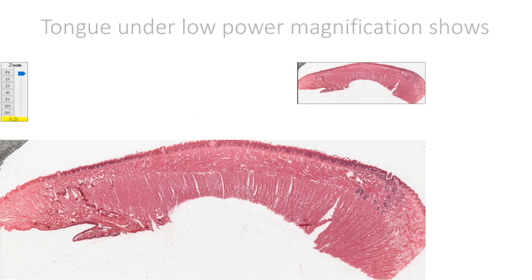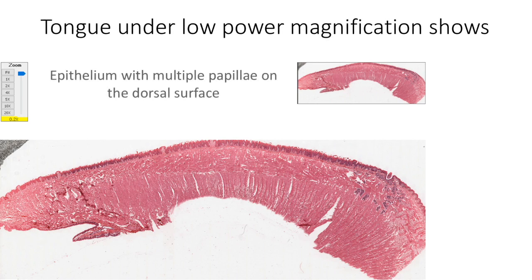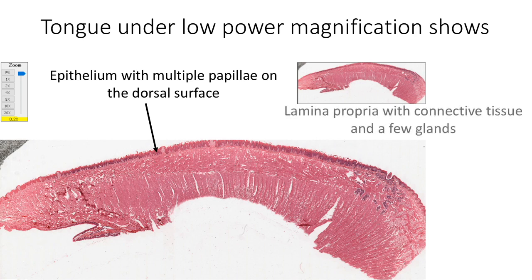Under low power magnification, the tongue shows a covering epithelium. This epithelium shows multiple projections on the dorsal surface called papillae. Just beneath the epithelium, we have connective tissue called the lamina propria, which also contains few glands and lymphoid tissue. The bulk of the tongue, however, is formed by skeletal muscle.